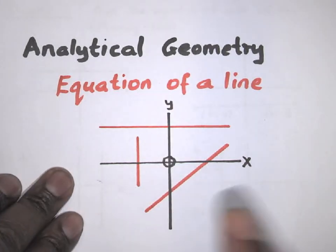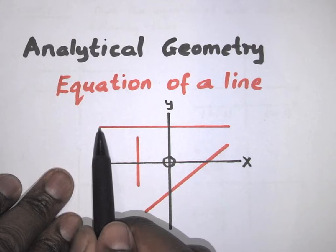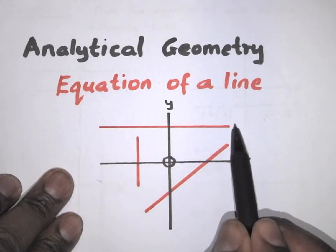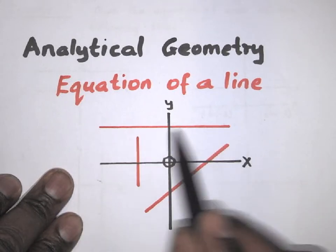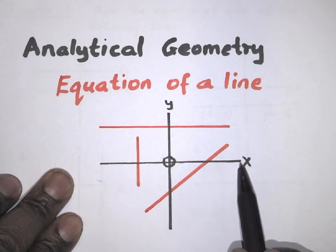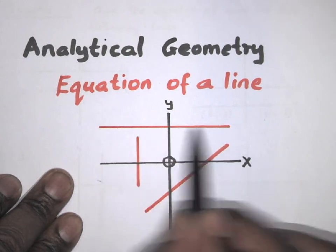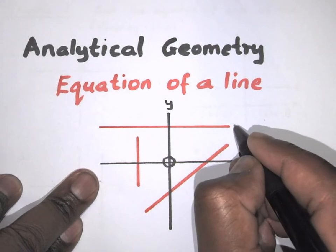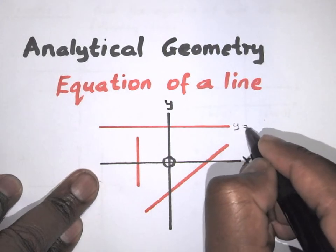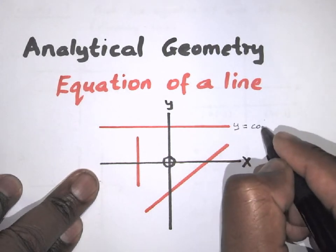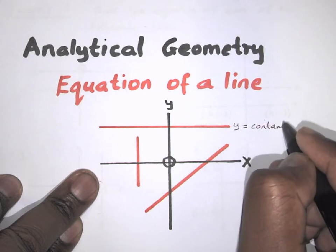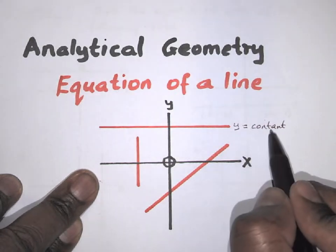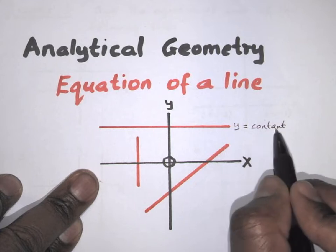Now, if a line just cuts the y-axis — if the line is parallel to the x-axis, only cutting the y-axis — your equation will be in the form y is equal to a constant number. The constant number could be 5, could be 8, could be 3.5, or minus a quarter.